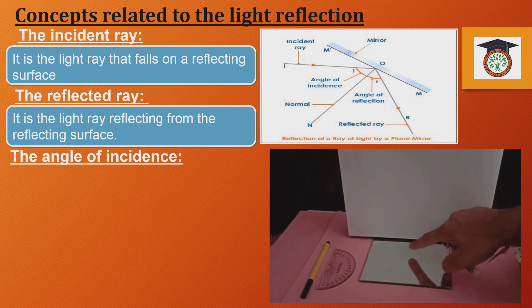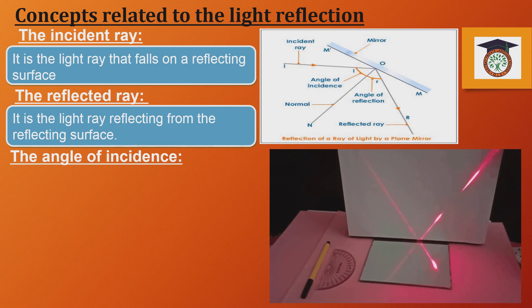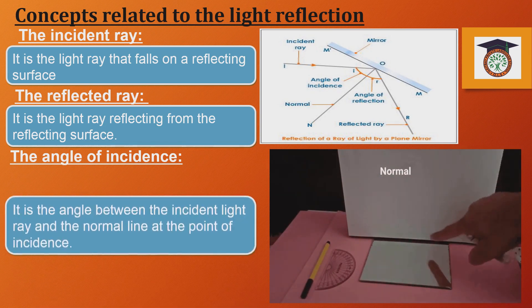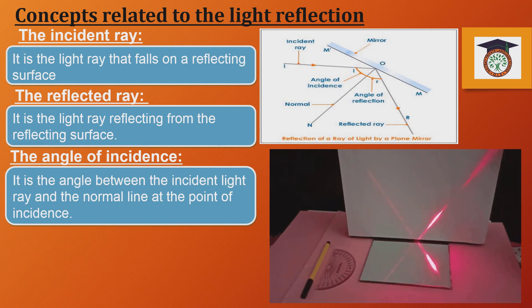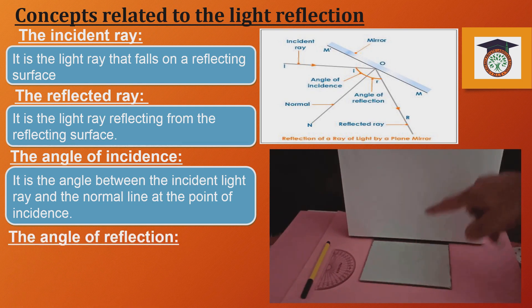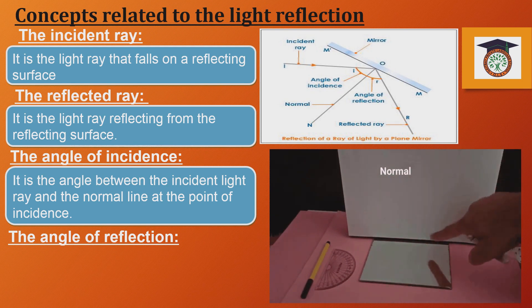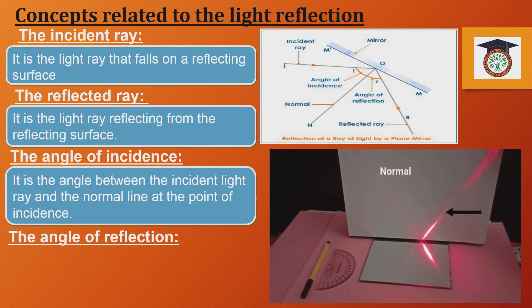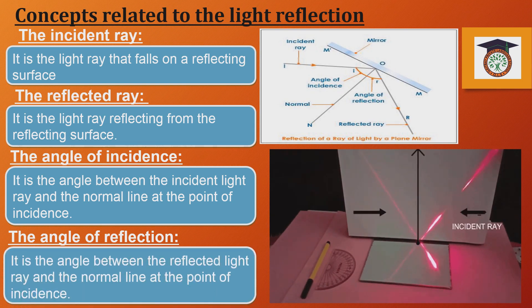The angle of incidence is the angle between the incident light ray and the normal line from the point of incidence. The angle of reflection is the angle between the reflected light ray and the normal line from the point of incidence.